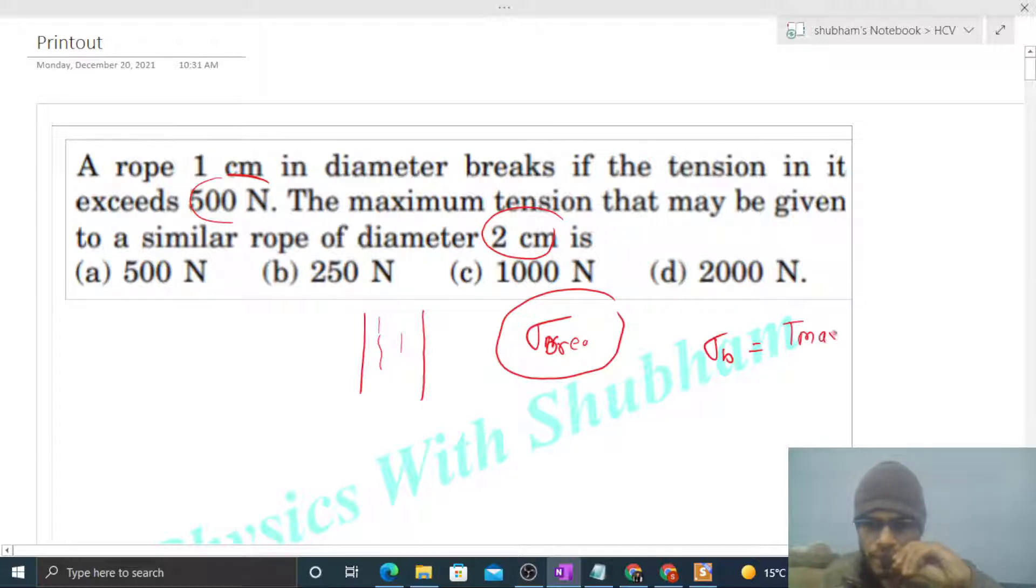...maximum tension that can be given to the rope divided by cross-sectional area of the rope. Or you can write it as: maximum tension equals breaking stress times cross-sectional area of the rope.